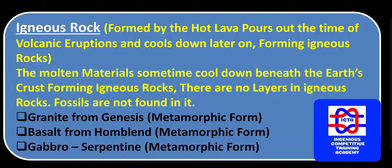Initially, igneous rock. This is formed by the hot lava that pours out at the time of volcanic eruptions and cools down later on, forming igneous rock. The volcano material that comes out is called magma, and that forms igneous rock. The molten material sometimes cools down beneath the earth's crust, also forming igneous rocks. There are no layers in igneous rocks, and fossils are not found in them.